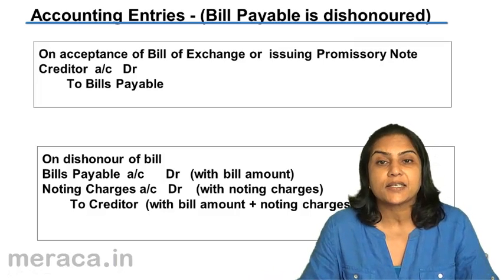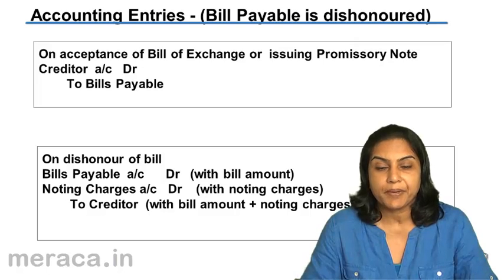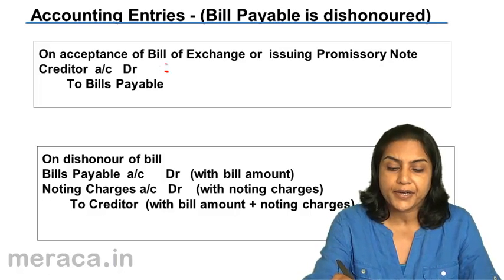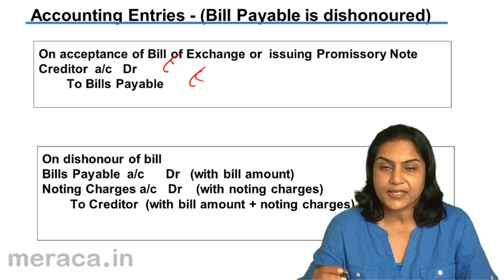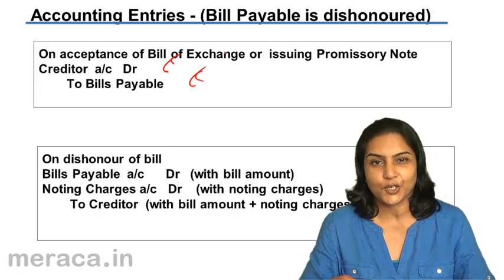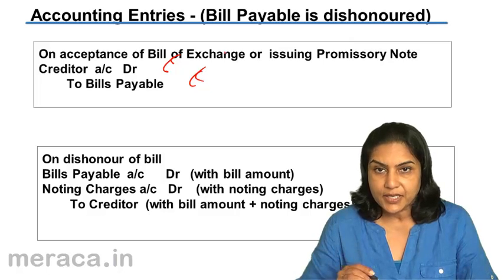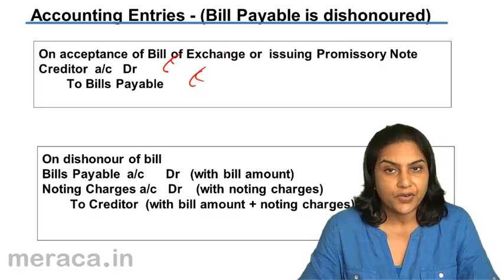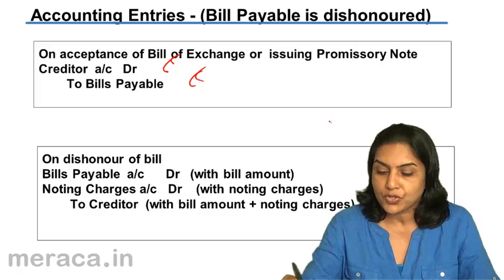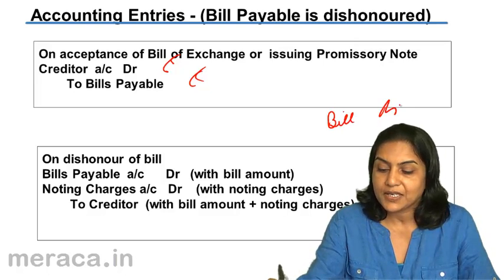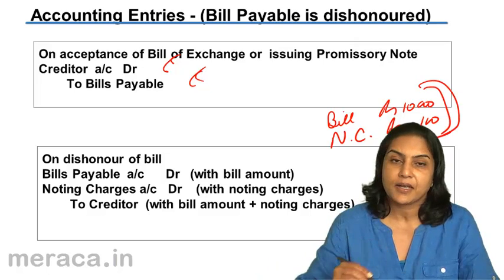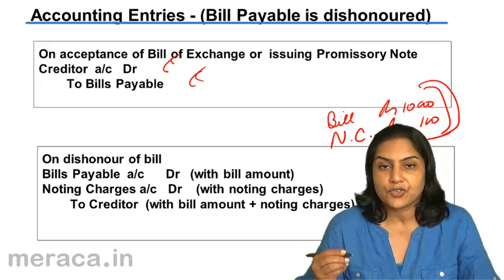If the bill is dishonored, what would be the entry? On acceptance of the bill, as said before, creditor account debit to bills payable. If this bill is dishonored and noting charges are incurred — let us say the bill amount was Rs. 10,000 and the noting charges are Rs. 100 — who incurs the noting charges?